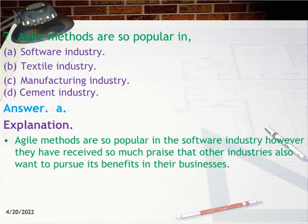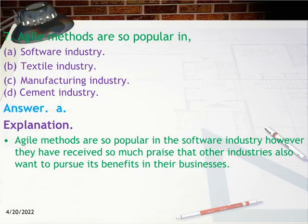Question 7: Agile methods are most popular in which industry? A. Software industry, B. Textile industry, C. Manufacturing industry, D. Cement industry. Answer: A. Software industry. Explanation: Agile methods are most popular in the software industry; however, they have received so much praise that other industries also want to pursue its benefits in their businesses.